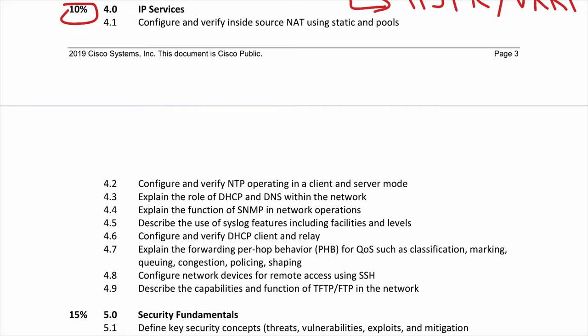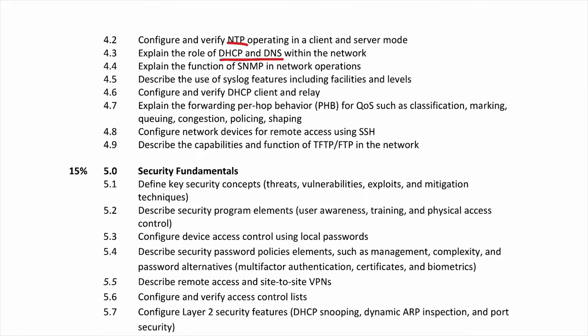Section 4 is 10% of the exam and is called IP Services. Here we'll cover things like NAT, NTP, DNS and DHCP, SNMP, QoS or Quality of Service, remote access into devices via SSH, TFTP and FTP, and security in terms of how we can upgrade IOS images on our devices.